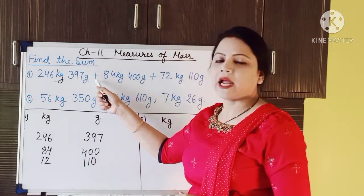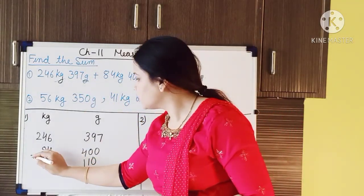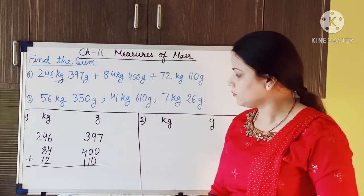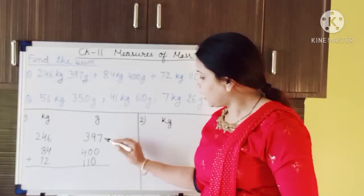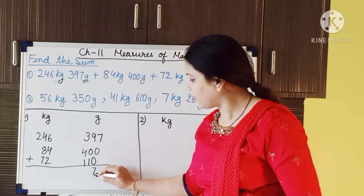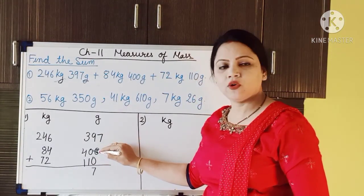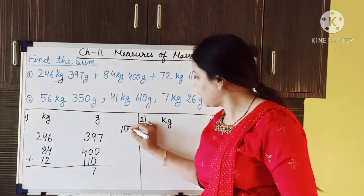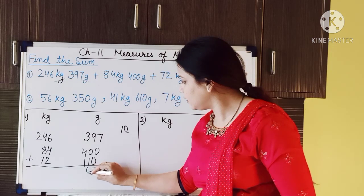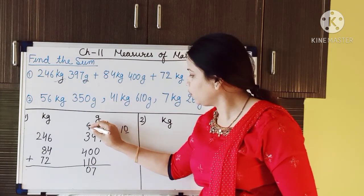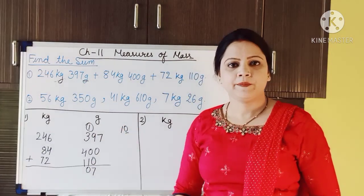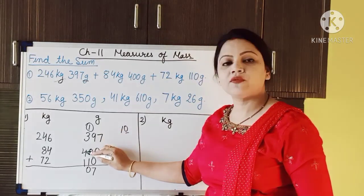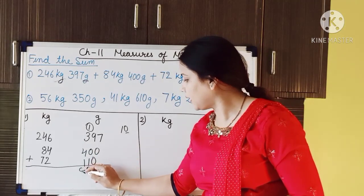Now we have to find the sum — the addition sign is given. So we add. Starting from the right: 7 plus 0 plus 0 equals 7. Then 9 plus 0 equals 9, plus 1 equals 10. We write 0 here and carry 1 over to the next place. Then 3 plus 1 is 4, plus 4 is 8, plus 1 is 9.